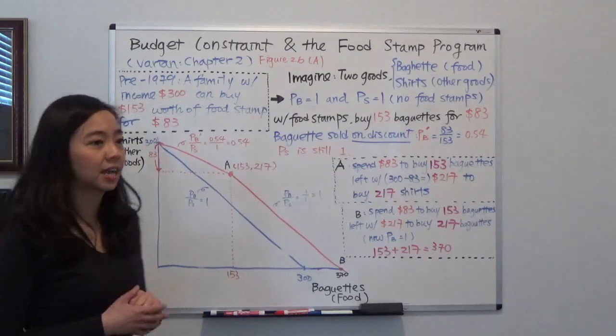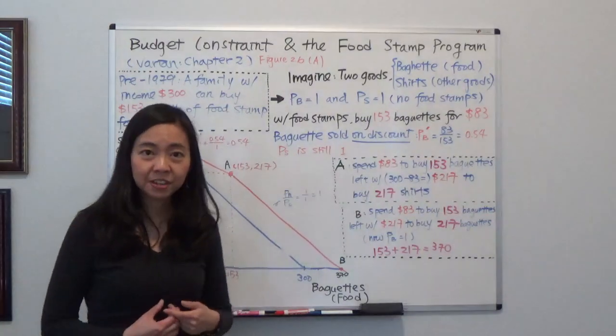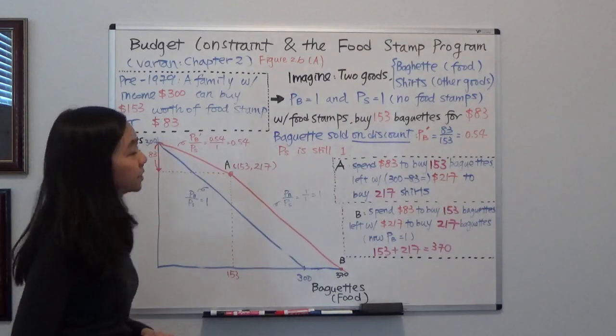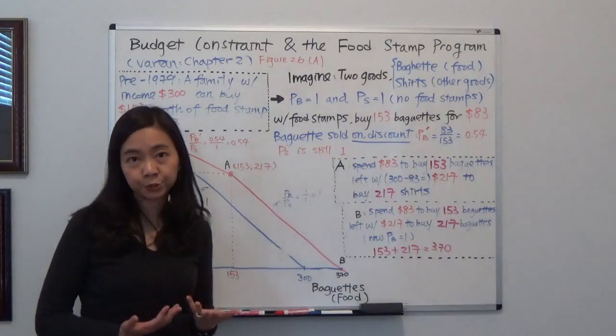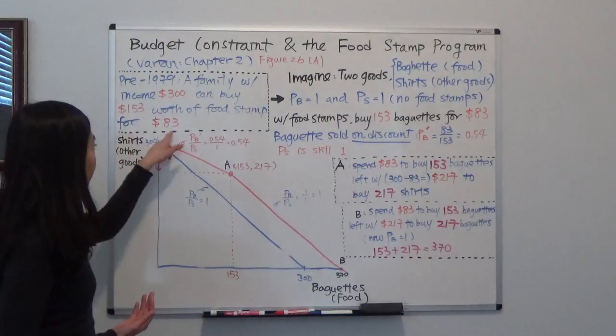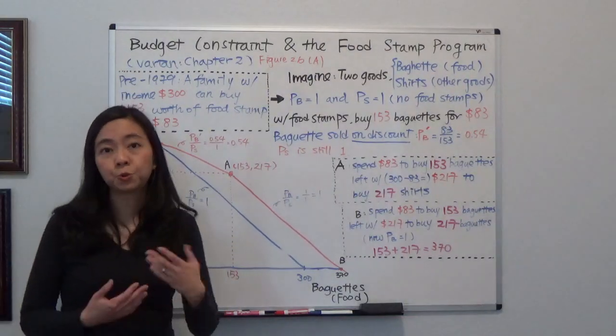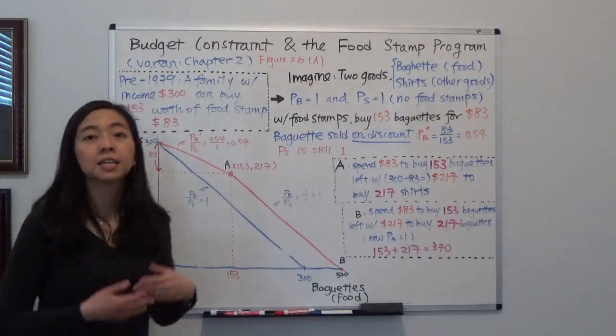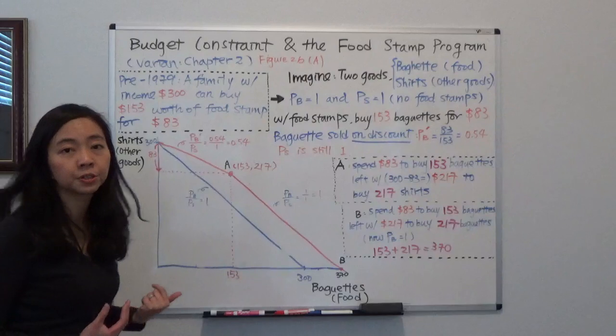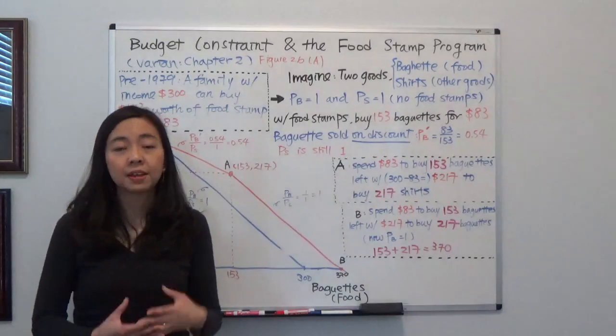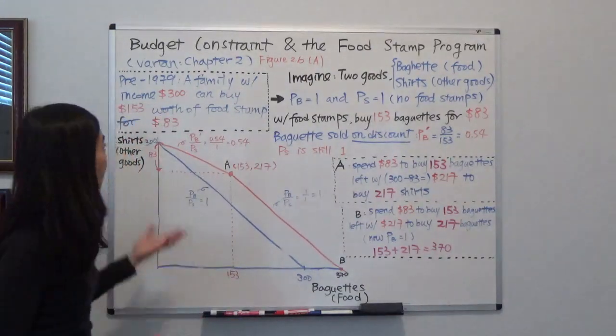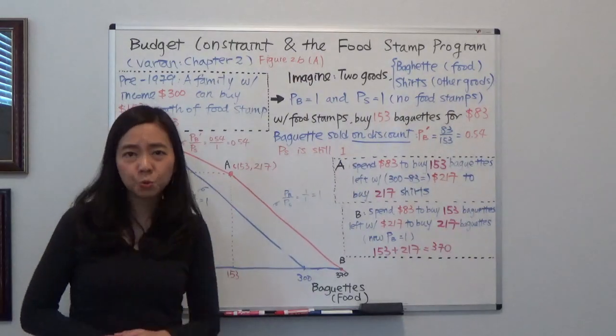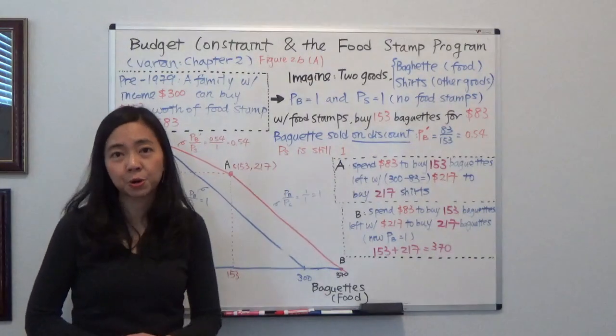According to the textbook, before year 1979, the government allows a poor family with an income of $300 to purchase food stamps. They pay $83 to purchase the food stamp that is worth $153, meaning they only have to pay $83 and they can get the food stamp that allows them to buy food that is worth $153. So how would that change the shape of our budget line?